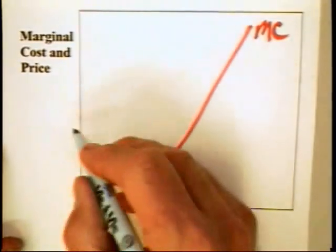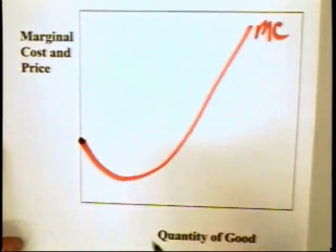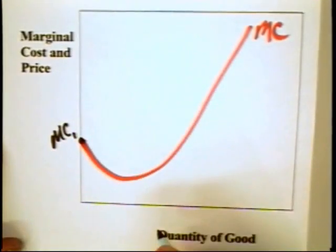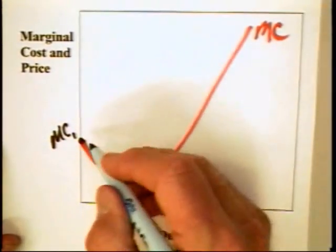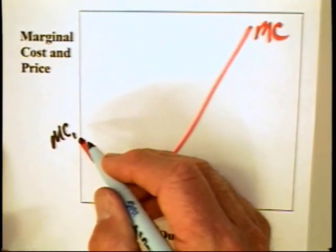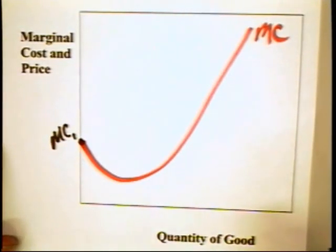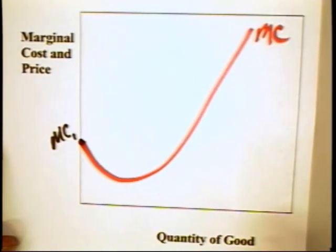It could be the case that when a firm starts out production, it incurs a very high or relatively high marginal cost. But as it applies more and more resources to a fixed unit of some other resource, it's quite possible that the firm achieves the benefits of specialization of, say, labor. In which case, the output expands disproportionately to the input.